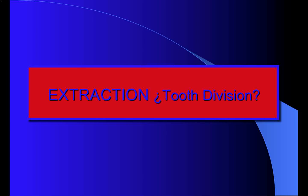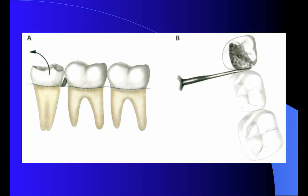The next step is the extraction of the lower third molar itself. Depending on its position, you may need a tooth division. Always place your elevator on the medial aspect of the crown and push against the crown of the third molar, avoiding pushing against the second molar so as not to damage its surface.